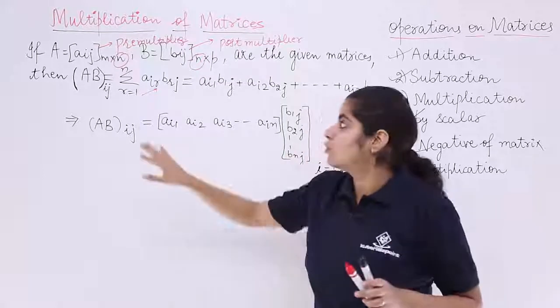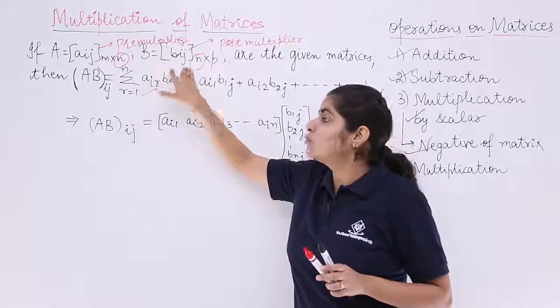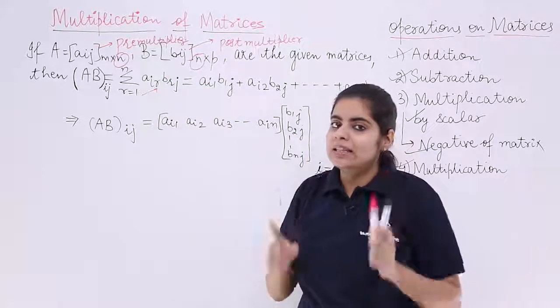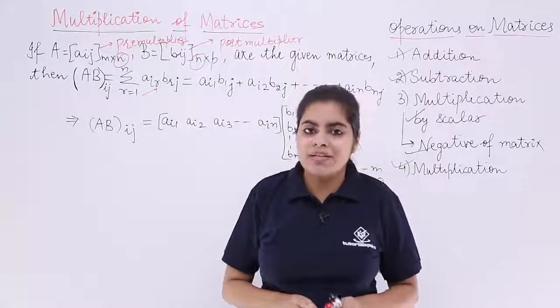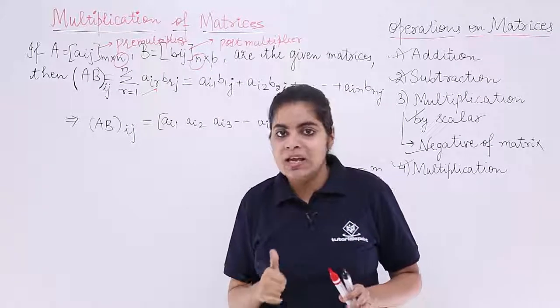So that means number of columns in the pre-multiplier should be same as number of rows in the post-multiplier. Then only two given matrices are conformable for product. They are possible to give you multiplication.